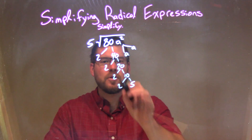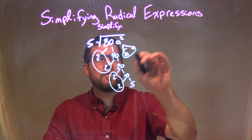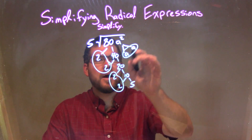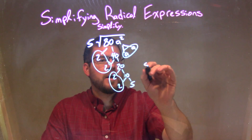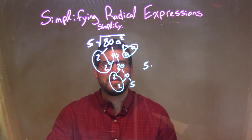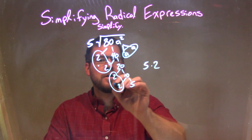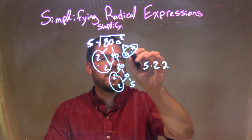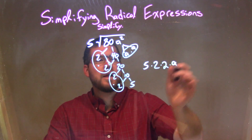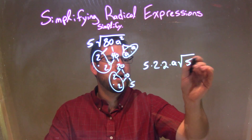So now let's go circle our pairs. I have a pair of 2s right there, and I have two pairs of 2s. I also have a pair of a's. So now I've taken my pairs — let's go fill them in. 5 stays on the outside, and I'm going to multiply 5 by each one of these pairs, just a single representation of each pair. One pair of 2s, another 2 times 2, and then times the a. Now what's left — the 5 is on the inside of the square root, so it's the square root of 5.